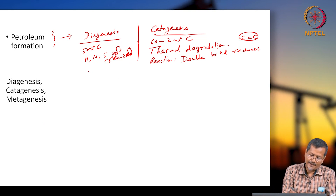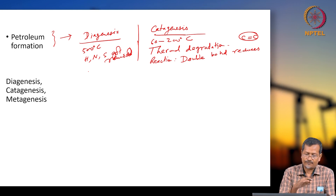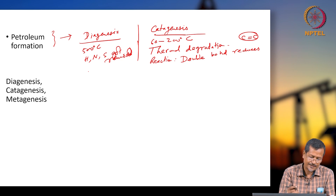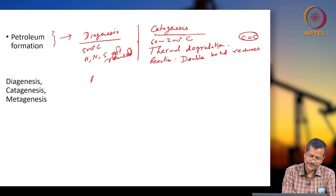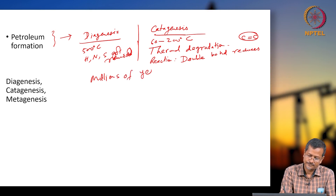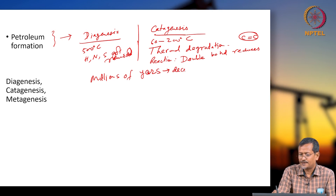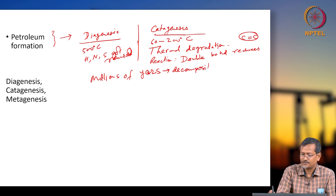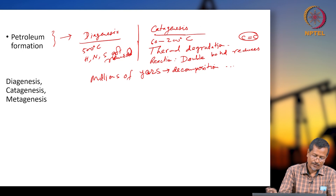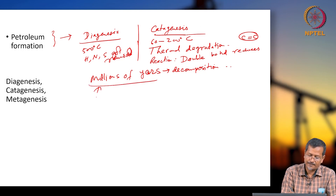Plants and animals die, and they sink and settle on the seabed. One layer after another will be deposited on the seabed. Decomposition will be occurring over millions of years.